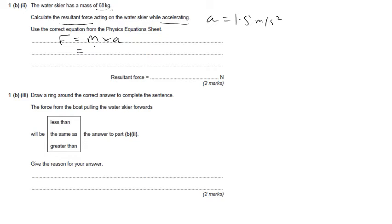It tells us the mass of the water skier is 68 kilograms. The acceleration was 1.5 metres per second squared. So that gives us a resultant force, 68 times 1.5, which is 102 newtons.